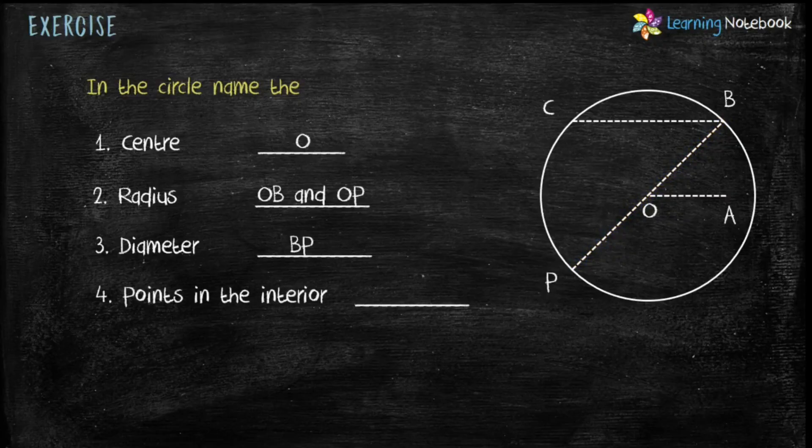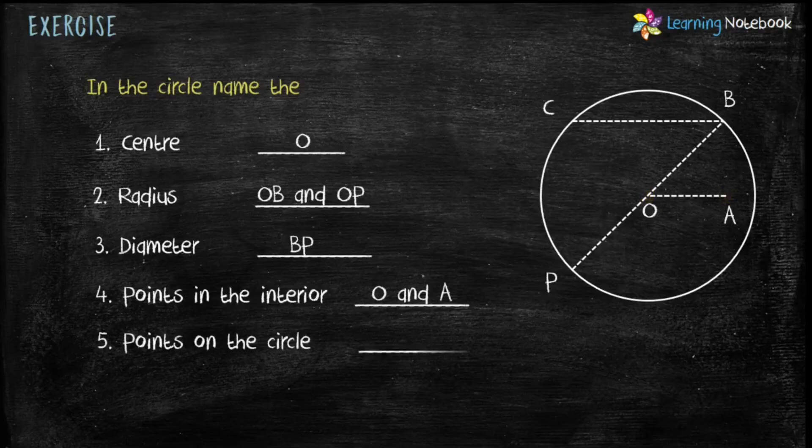Next, points in the interior of the circle are point O and point A. And in the end, points on the circle are point B, point C and point P.